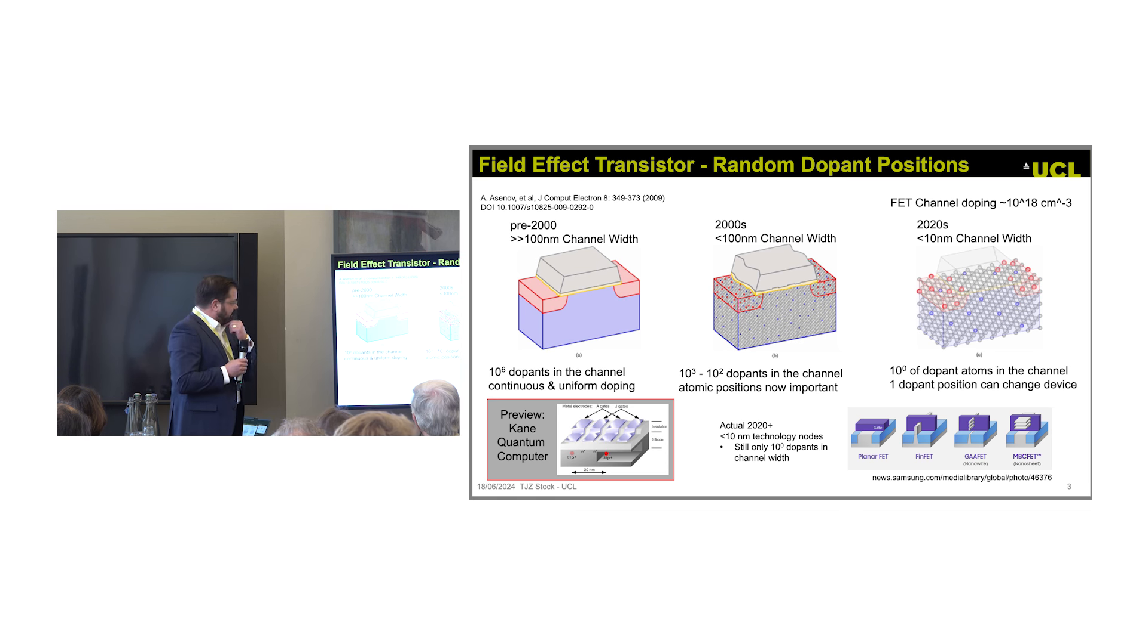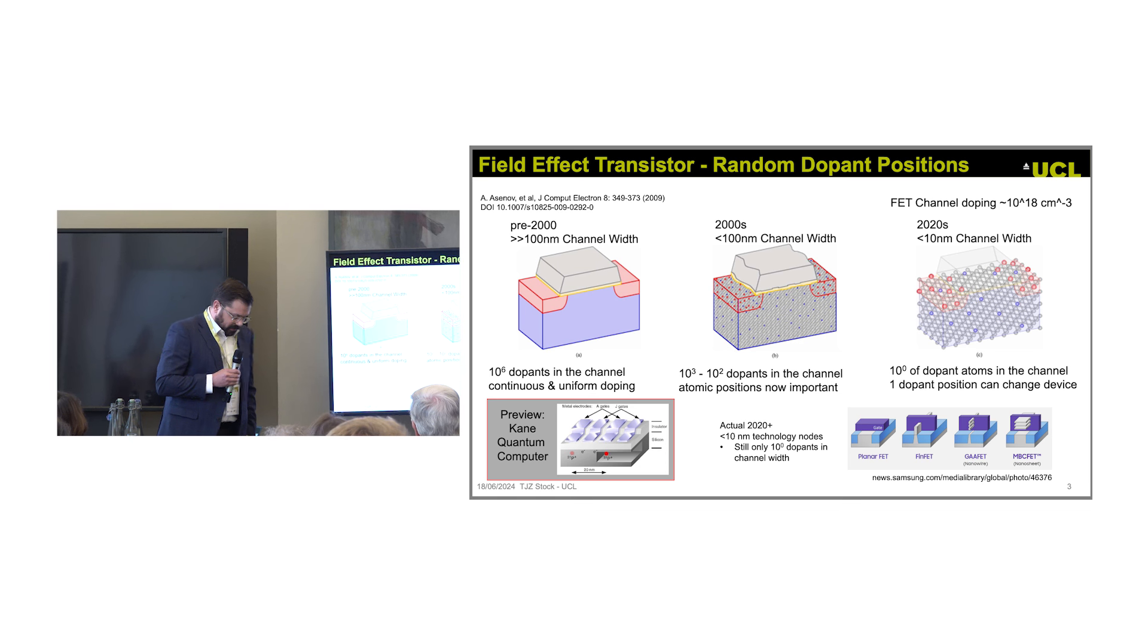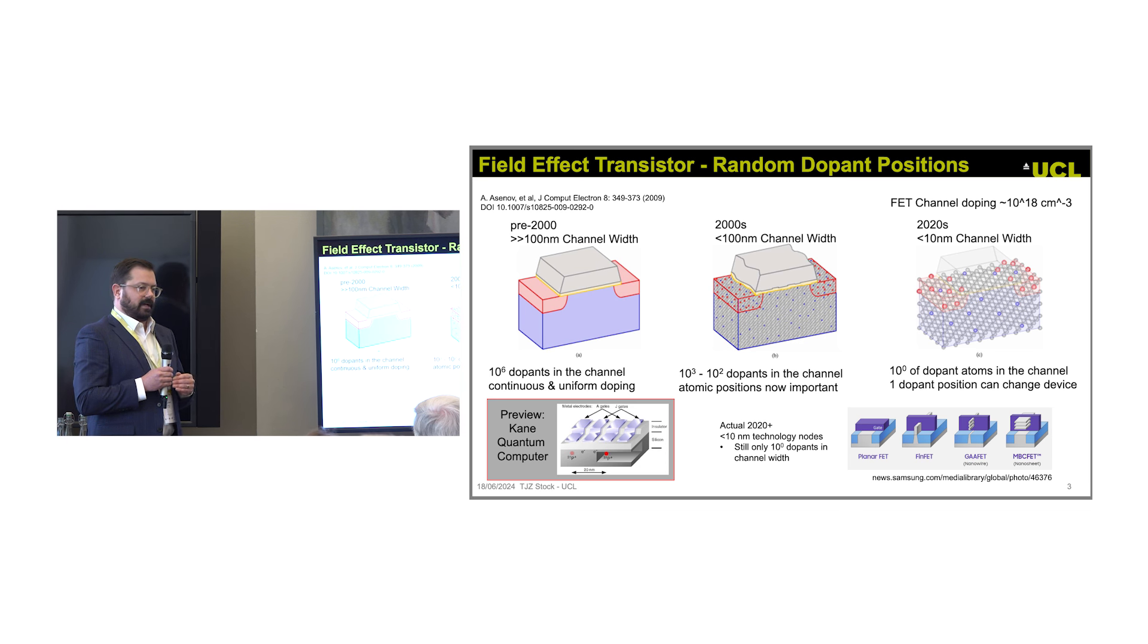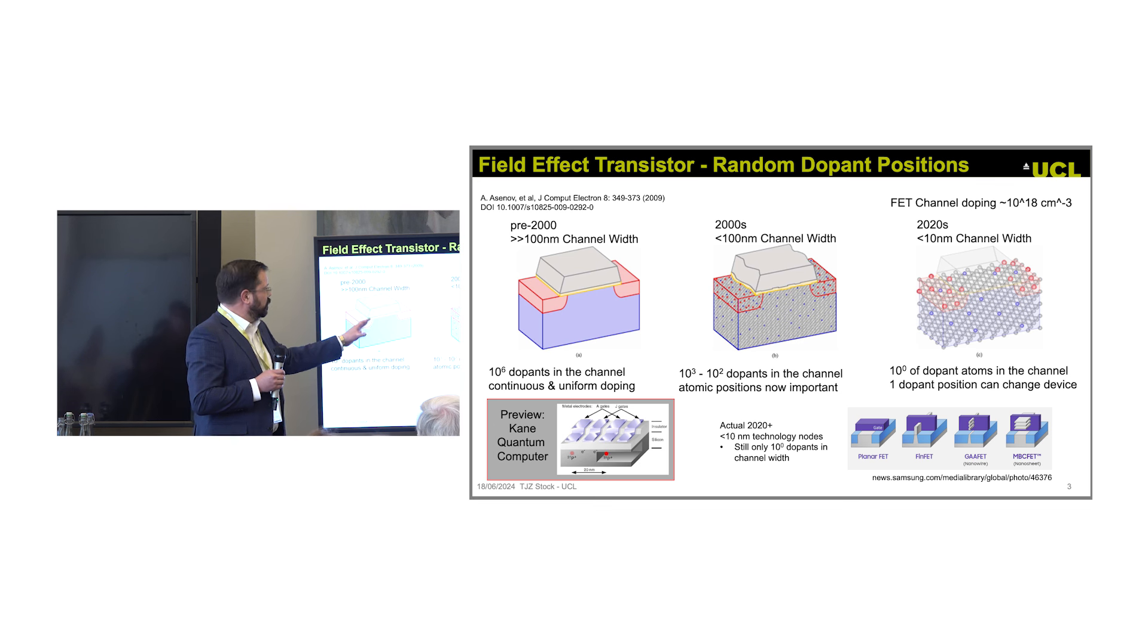If we think about scaling of transistors, we can look at this fairly well-known paper from Asinov that came out in 2009. Pre-2000, when you have 100 nanometer channel width and the channel's doped at 10^18 dopants per cubic centimeter, you can think of this as uniform material. In the 2000s, when we got smaller than 100 nanometers, the granularity of the material starts to come into play, and the number of dopants becomes 10^3, 10^2.